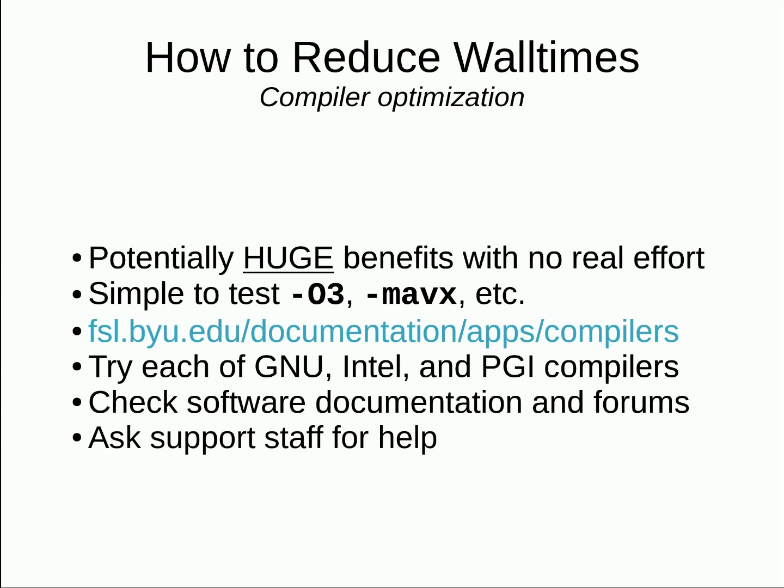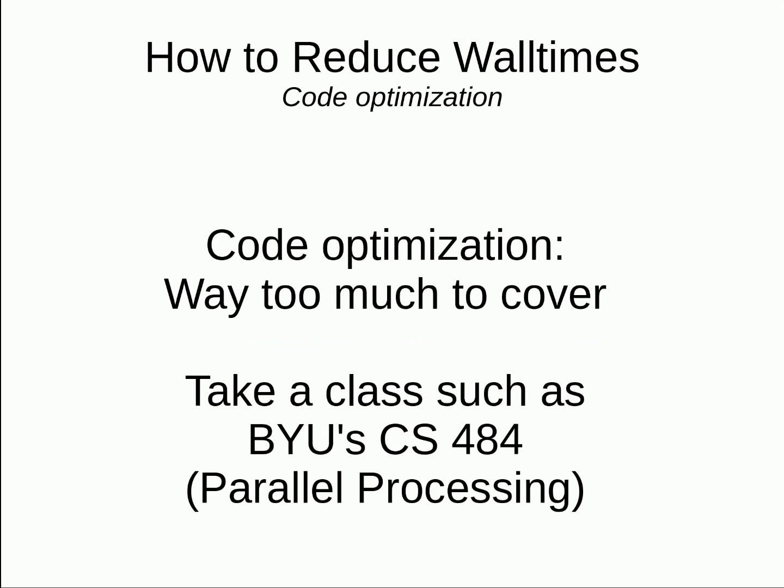We could talk about other code optimization techniques, but there are full courses dedicated to this. BYU's CS484 class, aka Parallel Processing, is a great way to learn about code optimization. There are probably some free online courses elsewhere on the internet, so look around if you're not at BYU.